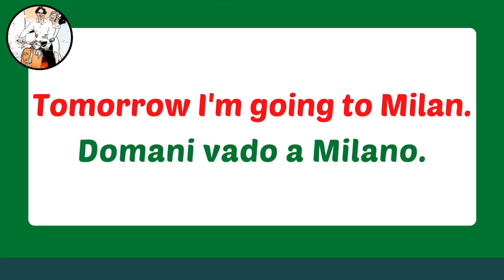Good news number one: the Italian futuro semplice is not really used that much in colloquial Italian, because we usually replace it with the present tense — just like it happens in English. For example, 'Tomorrow I'm going to Milan' in Italian is 'Domani vado a Milano.' Vado is the present tense of andare. So we use the present tense for something that is happening tomorrow.